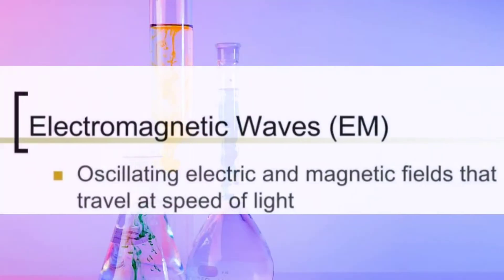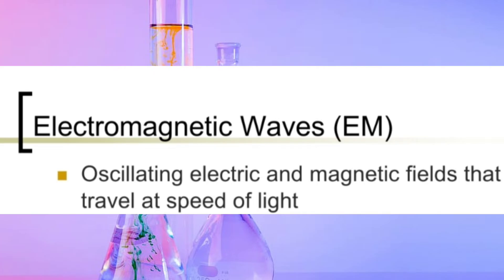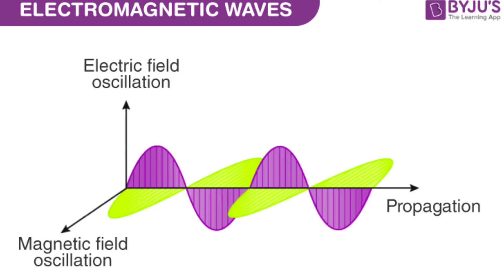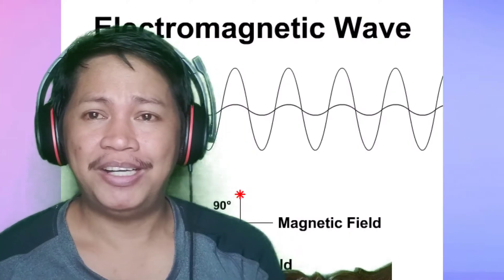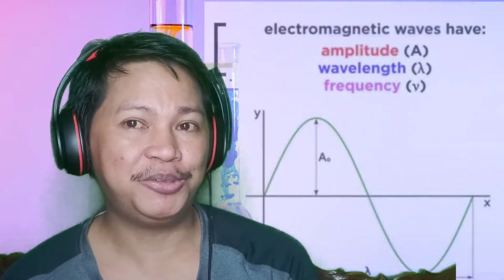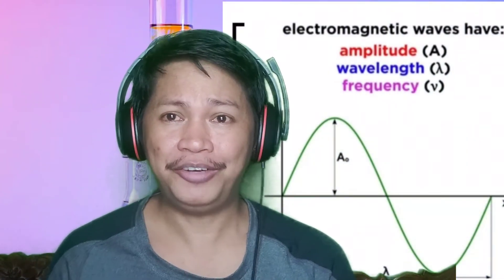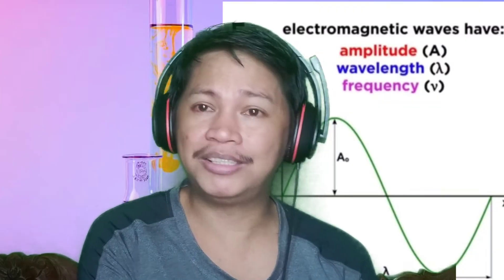So what is an electromagnetic wave? Based on my readings and research, electromagnetic waves are oscillating electric and magnetic fields that travel at the speed of light. Light travels in a straight line in a transverse manner. Now let's look at the components of an electromagnetic wave: amplitude, wavelength, and frequency.